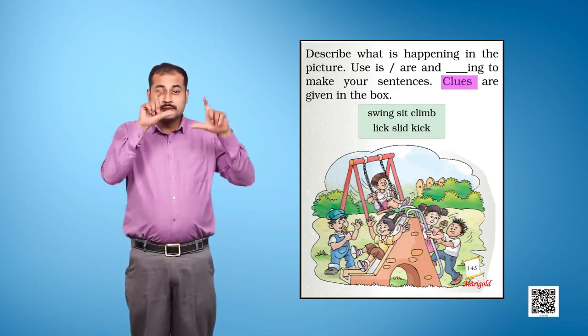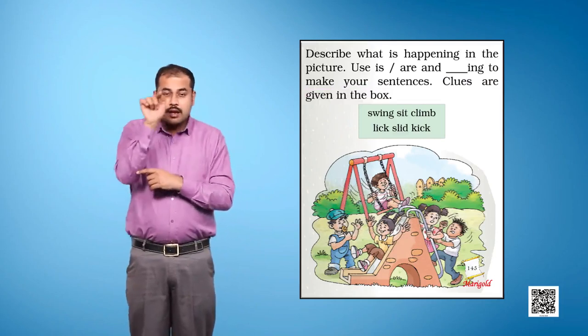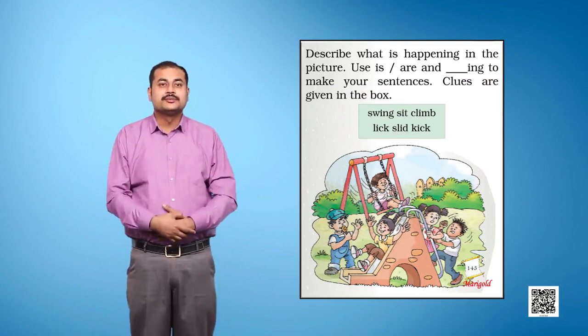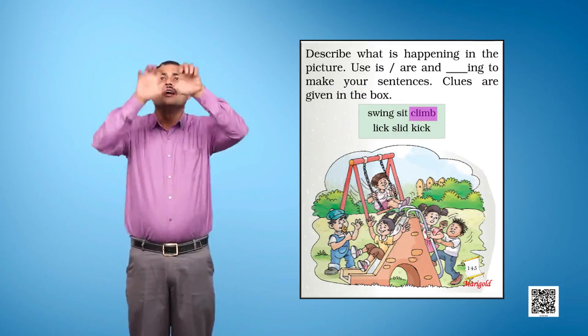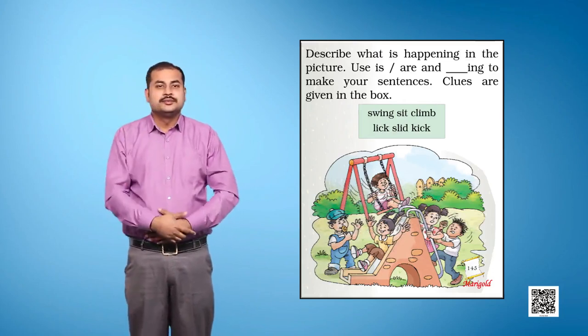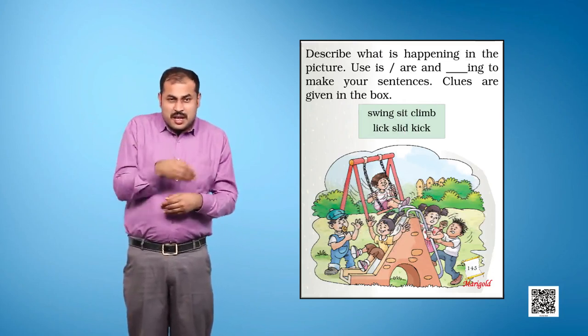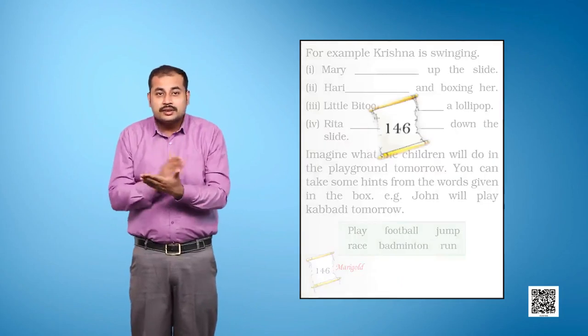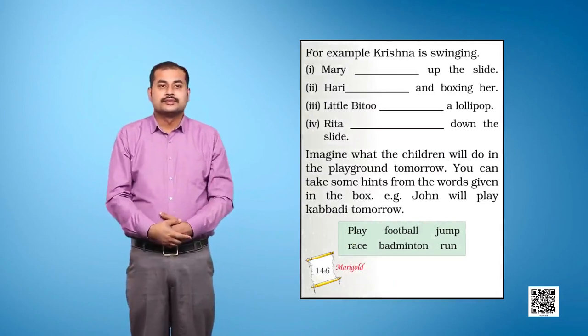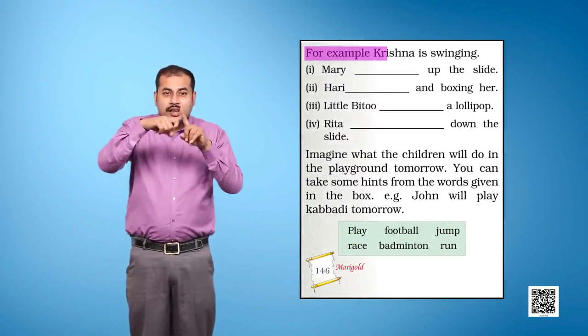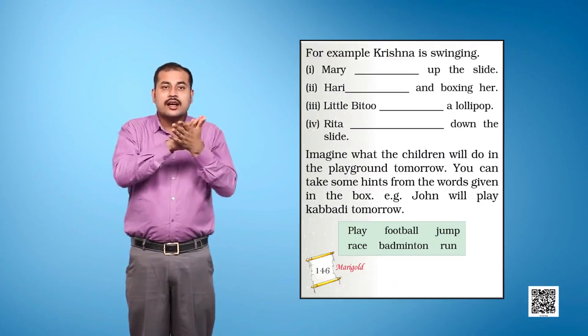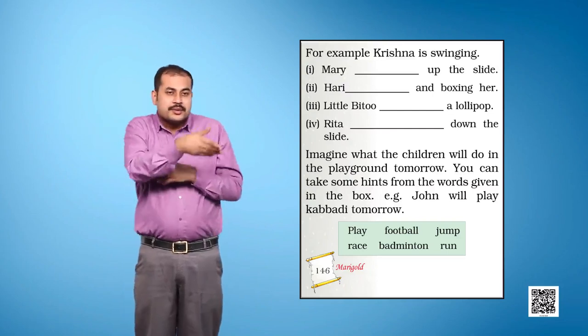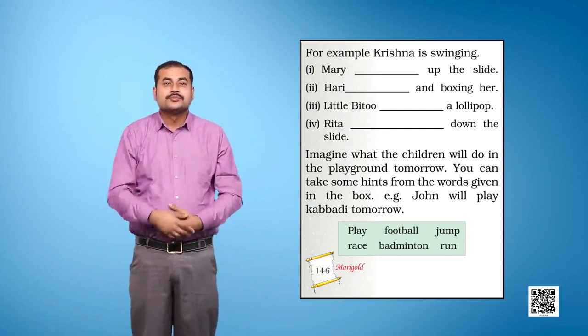Clues are given in the box: Swing, Sit, Climb, Lick, Slide, Kick. Page 146. For example, Krishna is swinging. One, Mary blank up the slide.